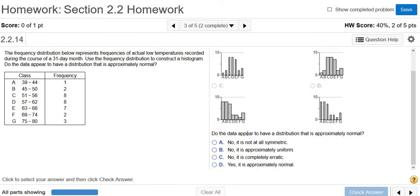Then it says, do the data appear to have a distribution that is approximately normal? So as long as it's roughly bell-shaped, you could say it's approximately normal. It doesn't have to be perfect.